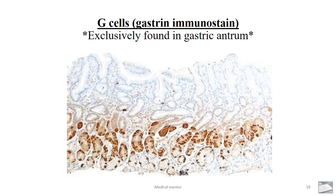This picture shows a gastrin immunohistochemical stain that highlights a band of G cells. These G cells are exclusively found in the gastric antrum, and their presence can be exploited to identify the site of tissue origin. The cardia, although it has similar mucosal deeper glands, would not have gastrin G cells and thus lacks the gastric gastrin immunohistochemical stain.